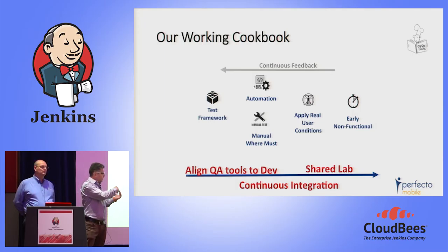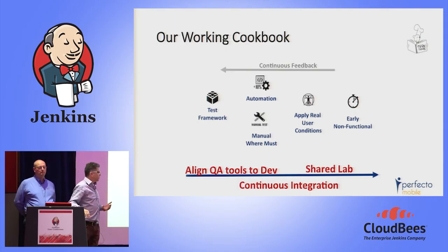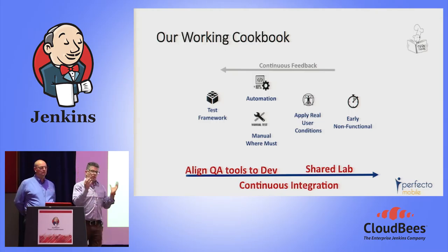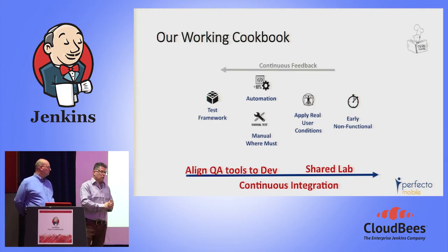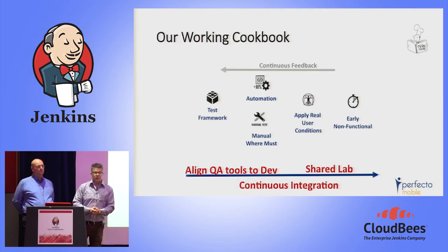The earliest possible point to introduce non-functional, performance, and usability testing, the better. Automation is definitely one of the key aspects of CI, and test frameworks tie into the alignment of QA tools and development. Think of this as a cookbook: all the keywords you need to remember are in these slides, and they will give your developers continuous feedback and allow faster iteration.